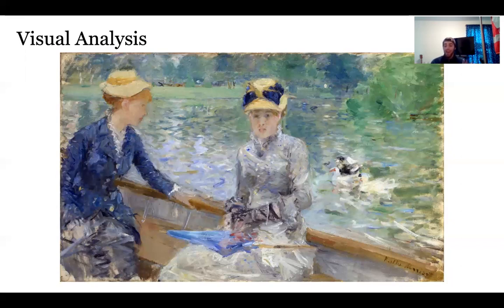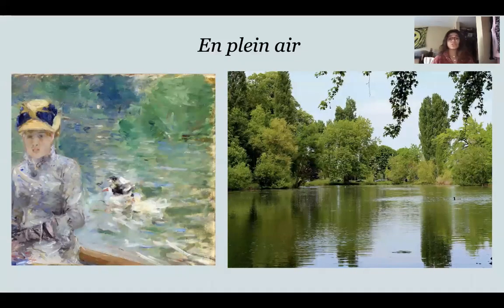Being out in nature — especially as this painting is set out on the water — really captures that natural element coming together, along with the more earth-like tones and some pastels. It's a really big shift in terms of style and format compared to the previous centuries, and this really does an excellent job of putting Morisot on par with Monet.